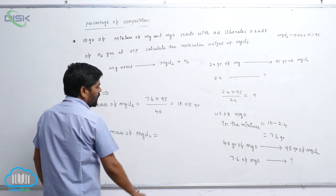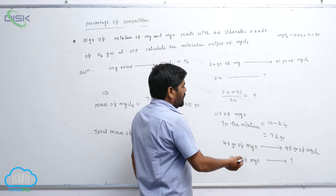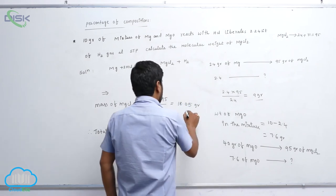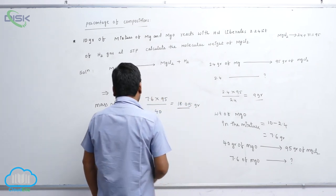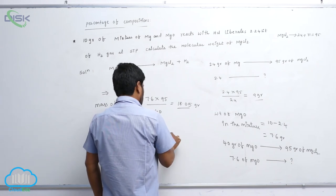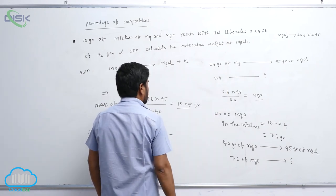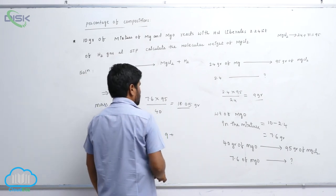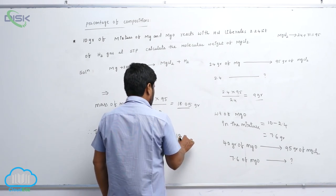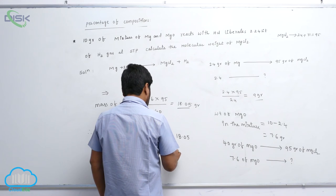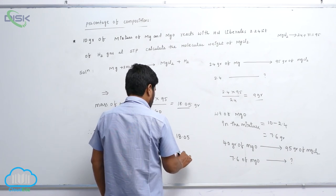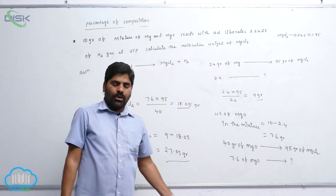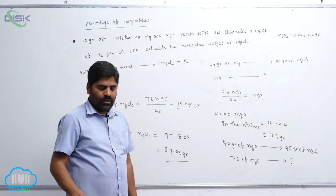Therefore, the total mass of magnesium chloride equals 9 grams from magnesium plus 18.05 grams from magnesium oxide, giving a total of 27.05 grams. This is the total mass of magnesium chloride produced from the mixture.